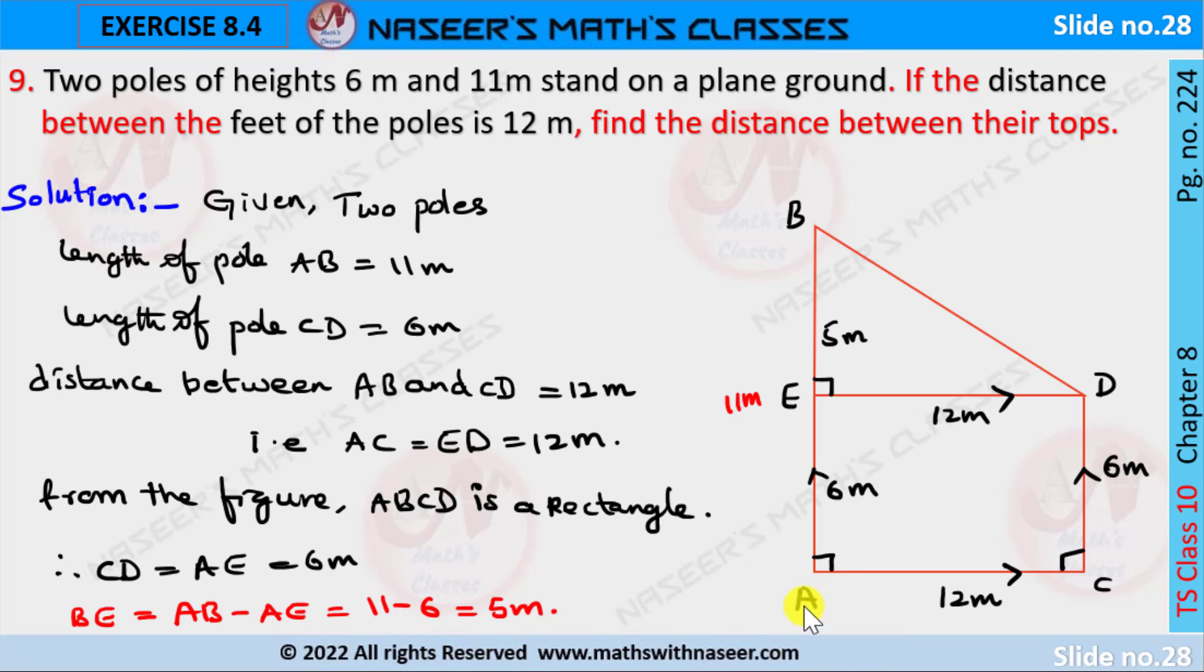From the figure, we can say AE also equals 6 meters, because we get a rectangle here, ACDE, where opposite sides are equal length. Now we have to find the BE value. BE is written as AB minus AE, which equals 11 minus 6, which is 5 meters.